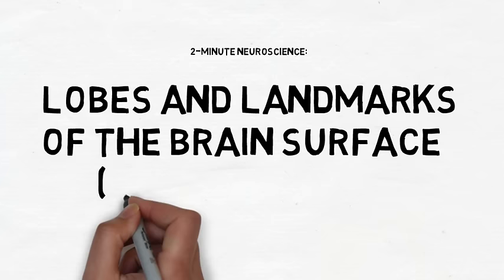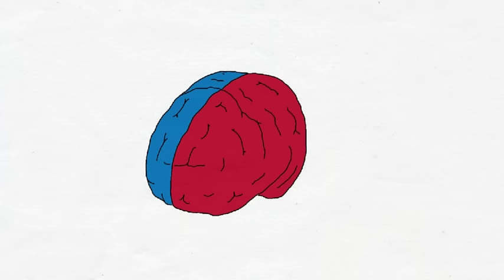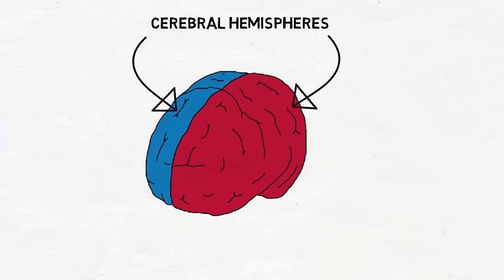The brain is made up of two halves, known as cerebral hemispheres. When looking at the brain from a lateral view, which just means looking at it from the side, we will only see one cerebral hemisphere, but the landmarks I will point out are found on both cerebral hemispheres.